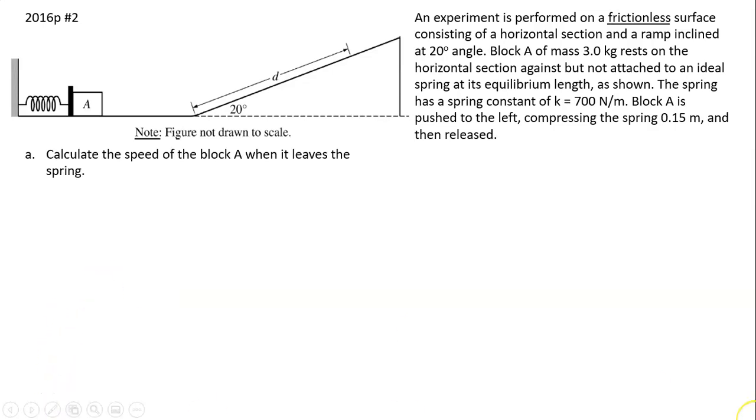Part A: Calculate the speed of block A when it leaves the spring. This is the concept of conservation of energy because the only force acting on the block is force of spring, which is a conservative force. K equals one half mv squared and U elastic is one half kx squared. From here you can solve for v and substitute the given values: v = 2.29 m/s.